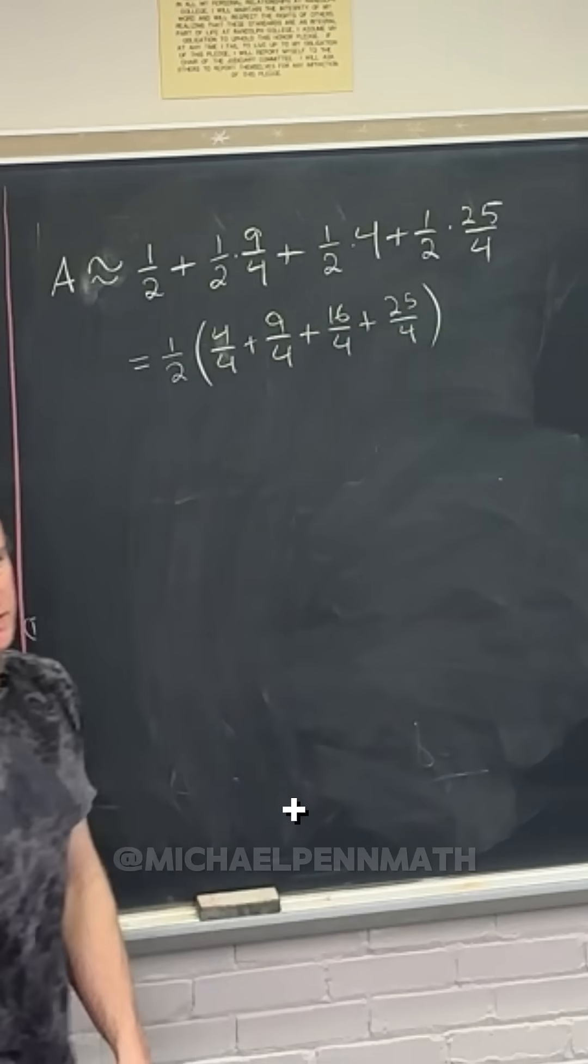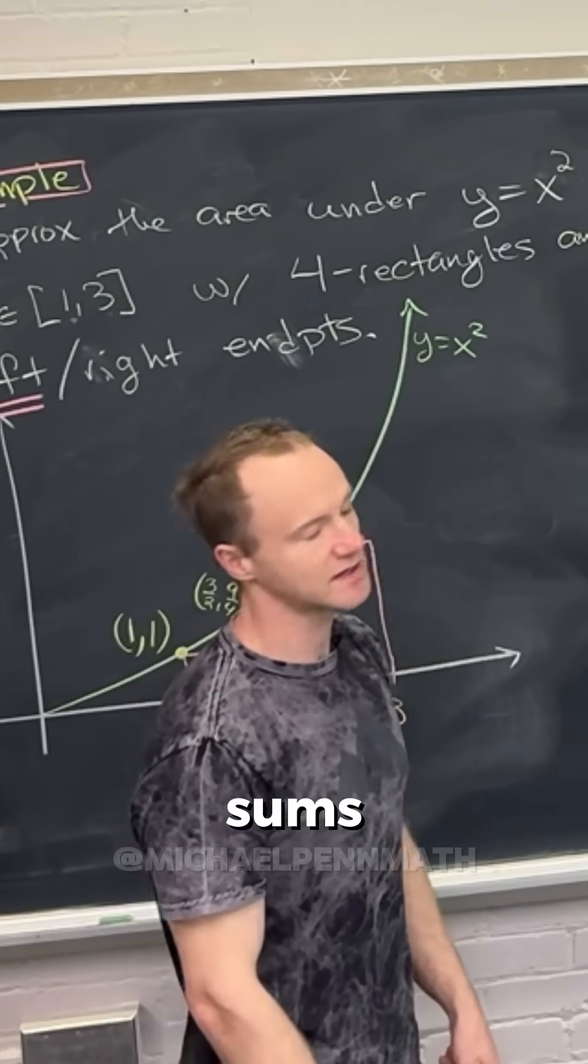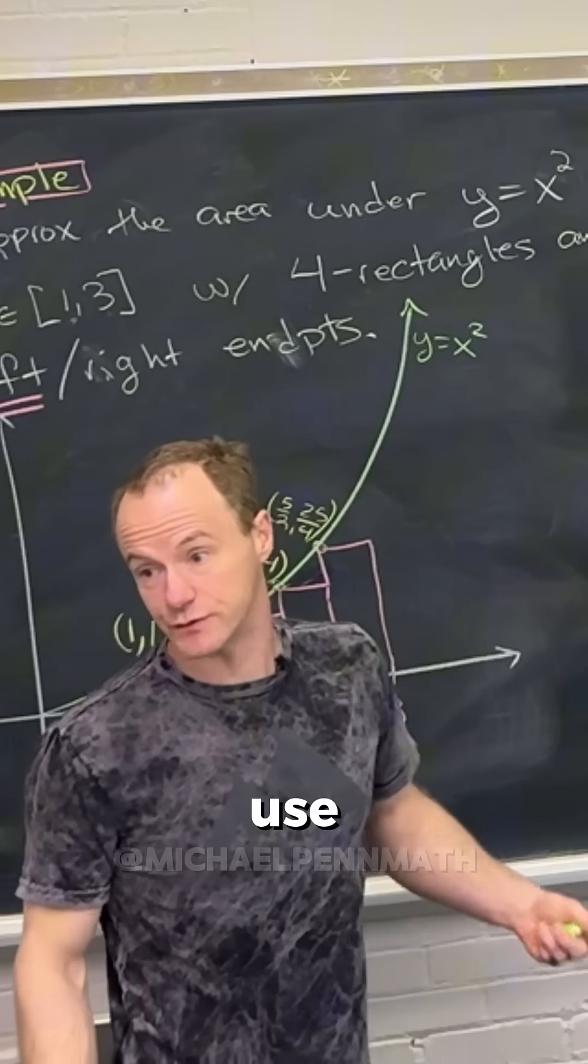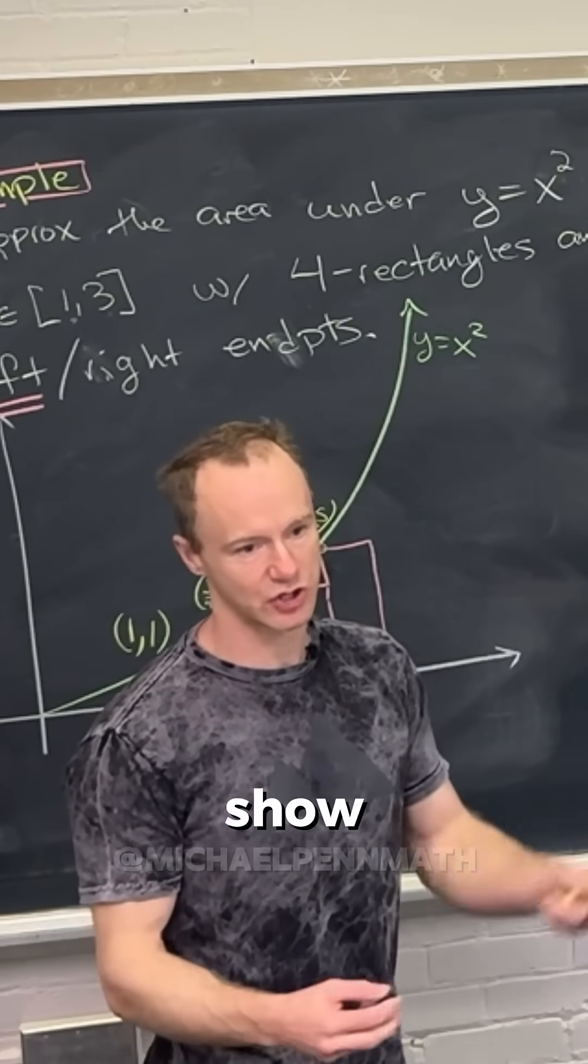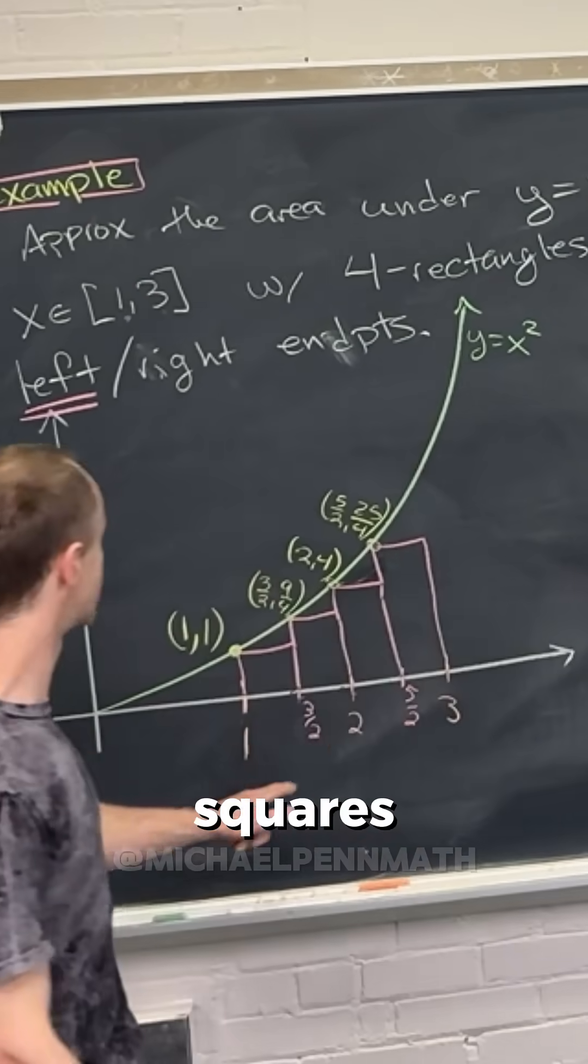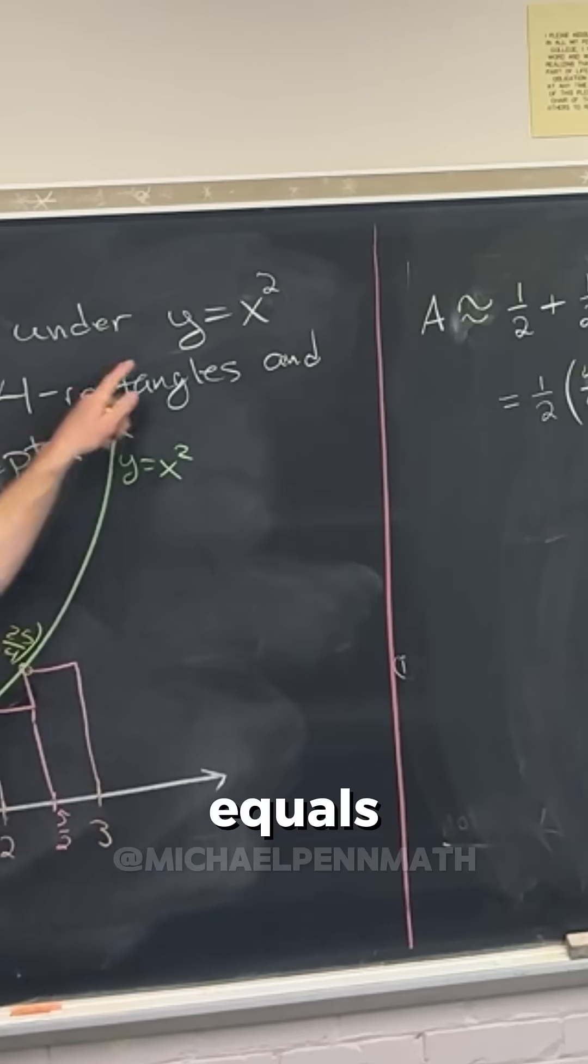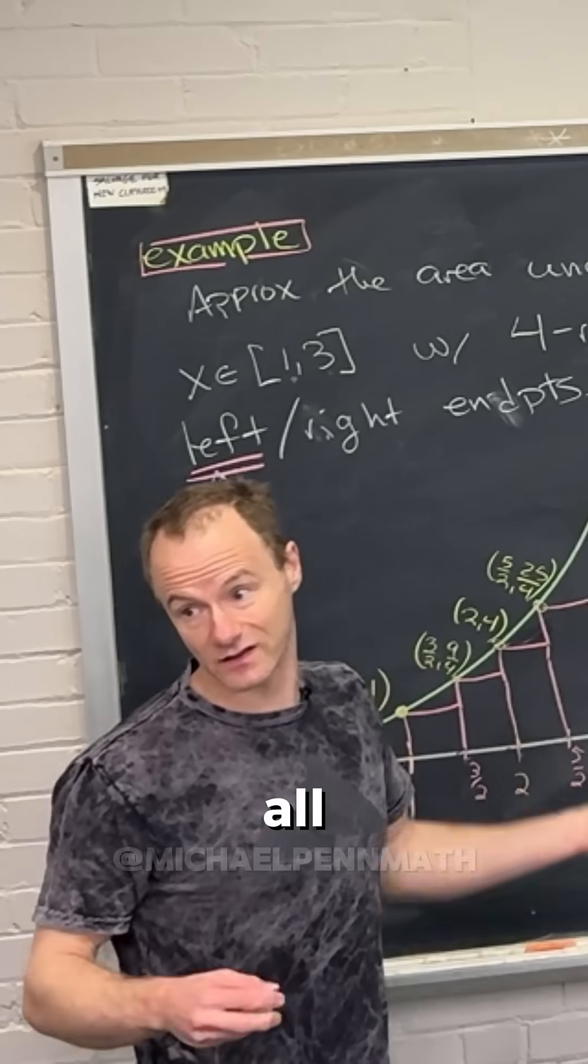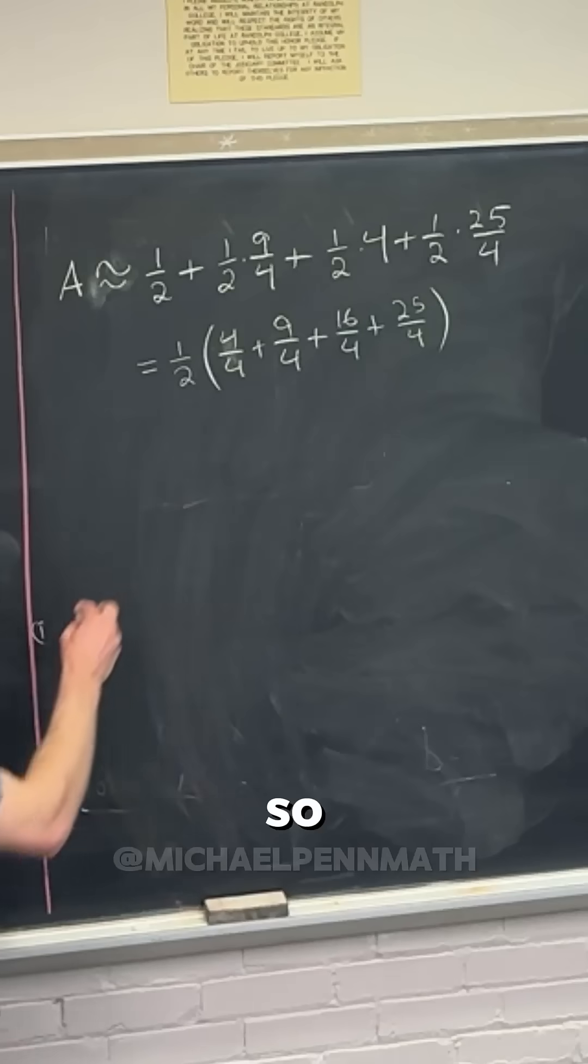Oh look, four plus nine plus 16 plus 25, that's exactly sums of squares, right? We don't really need to use it here, but that's where it's going to show up kind of in general later. Notice sums of squares showed up in this y equals x squared thing. That's why we did all of that like preparation or whatever.